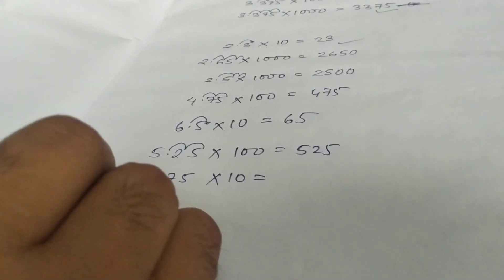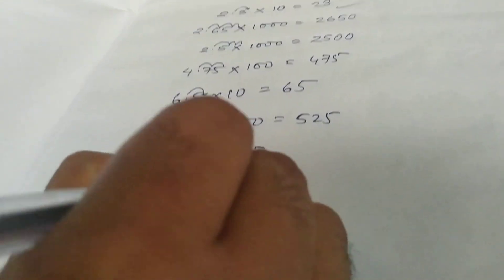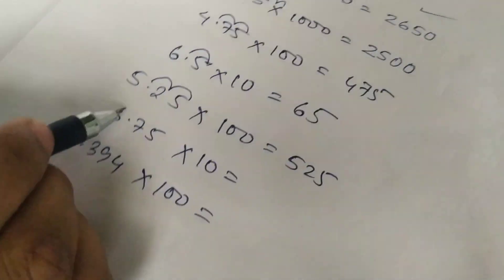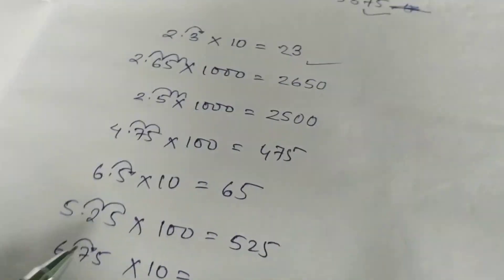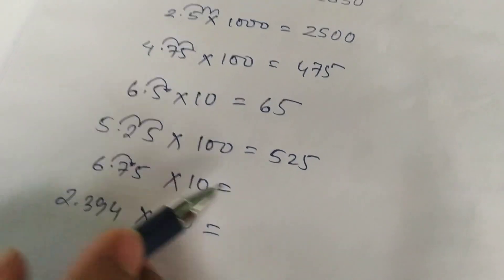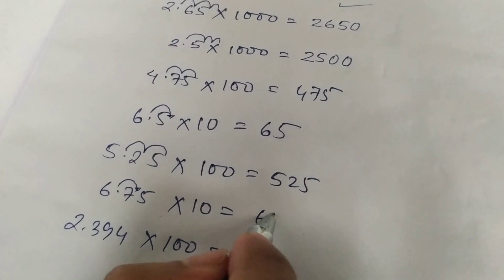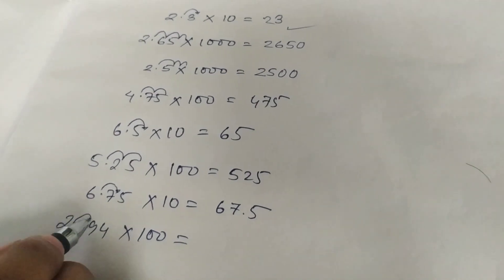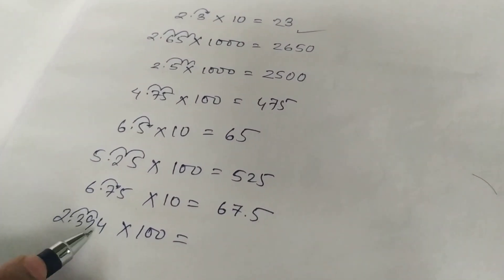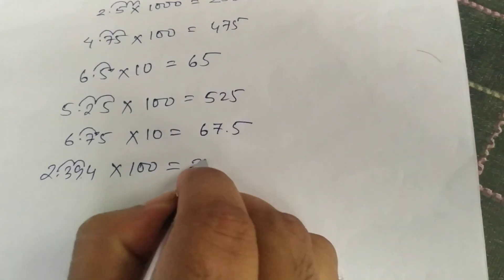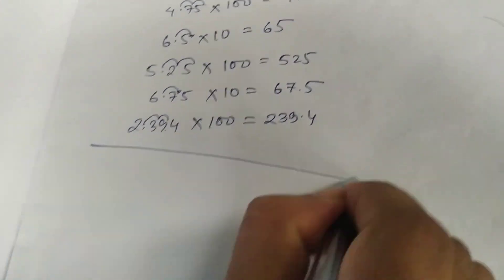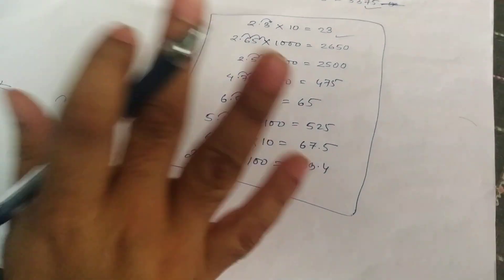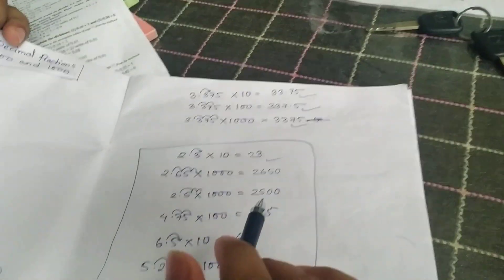A couple more: for 6.75 × 10, the decimal goes one step ahead, no empty boxes, but after the decimal there is a number — so it's 67.5. For 2.394 × 100, the decimal moves two steps — answer is 239.4. I hope this part is clear — how to multiply with 10, 100, and 1000.